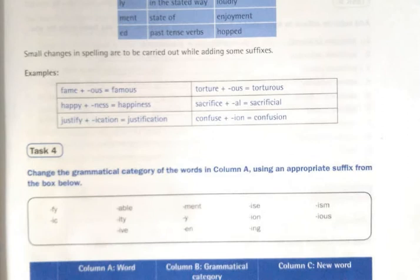Small changes in spelling are to be carried out while adding some suffixes. For example, fame plus ous gives famous. Happy plus ness gives happiness, the y changes to i. Justify plus cation is justification. Torture plus ous gives torturous, the e is omitted. Sacrifice plus al gives sacrificial and confuse plus ion gives confusion, the e is again omitted.